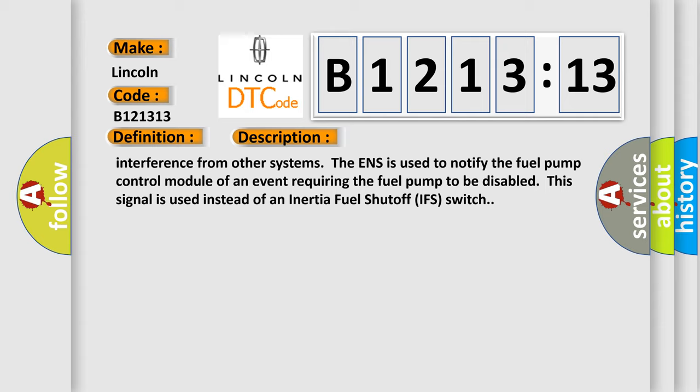This subtype is used for failures where the control module determines an open circuit via lack of bias voltage, low current flow, no change in the state of an input in response to an output, etc.